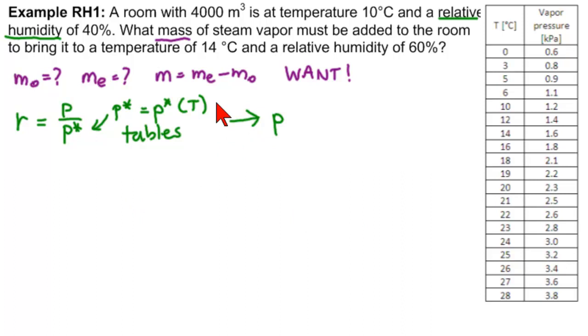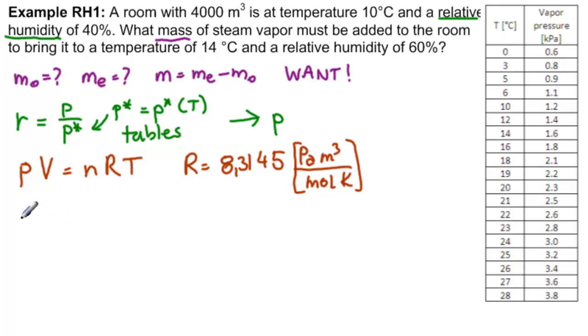Now, what do we have if we have P and V? We will use the ideal gas law. So that is PV equals nRT. And we know that R is equal to 8.3145 pascals meters cubed per mole Kelvin. So that's the unit we want here. We know that we can use n to get m. So what is the equation for that? m equals M times n, where M is the molar mass of water.